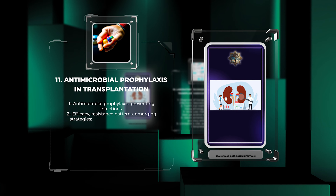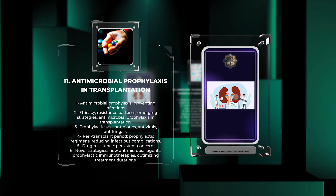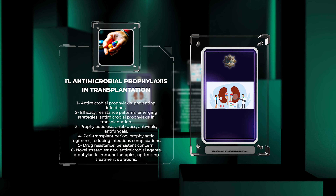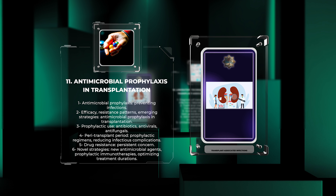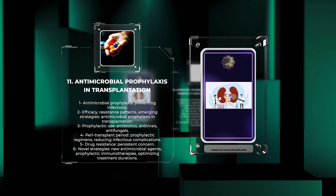Antimicrobial prophylaxis plays a crucial role in preventing infections in transplant recipients. We will explore the efficacy, resistance patterns, and emerging strategies related to antimicrobial prophylaxis in transplantation. Prophylactic use of antibiotics, antivirals, and antifungals is commonly employed in the peri-transplant period. While these prophylactic regimens have proven efficacy in reducing infectious complications, the emergence of drug resistance is a persistent concern. Novel strategies, including the development of new antimicrobial agents, prophylactic immunotherapies, and optimizing treatment durations, are underway to tackle these challenges.